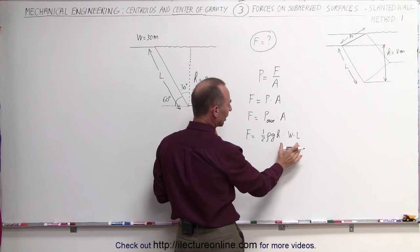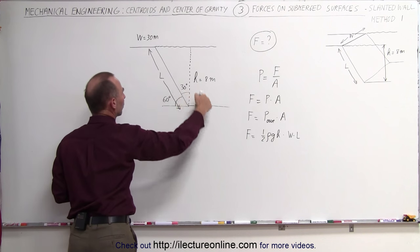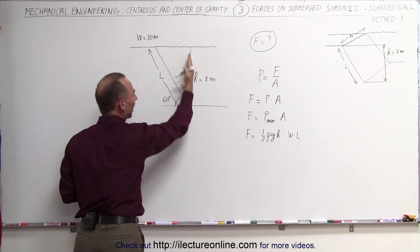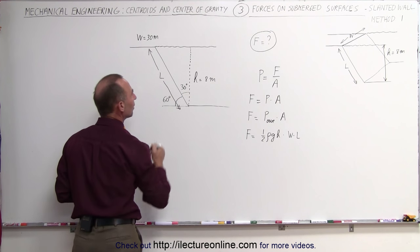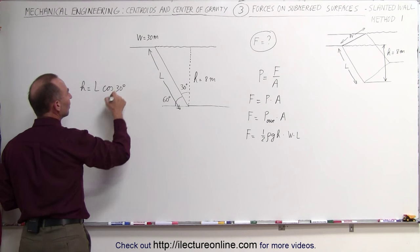Now we have to find a relationship between the length and the depth of the water. Looking at this triangle right here realizing that the hypotenuse is L, the side here adjacent to 30 degrees is H. We can then say that H can be defined as being the hypotenuse times a cosine of 30 degrees.